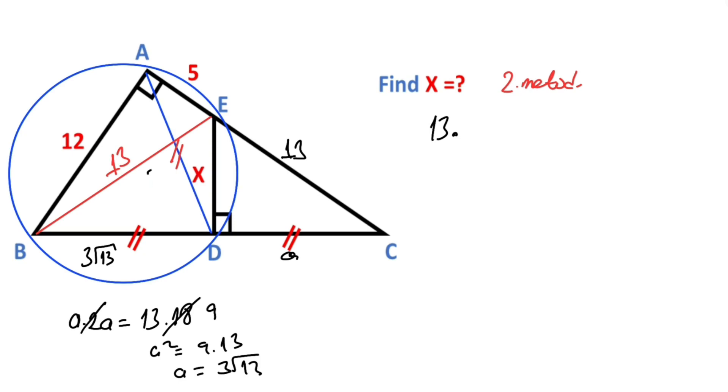So 13 times 3 root 13 equals x times 12 plus 5 times 3 root 13. So 39 root 13 minus 15 root 13 equals x times 12. And then 24 root 13 equals x times 12.